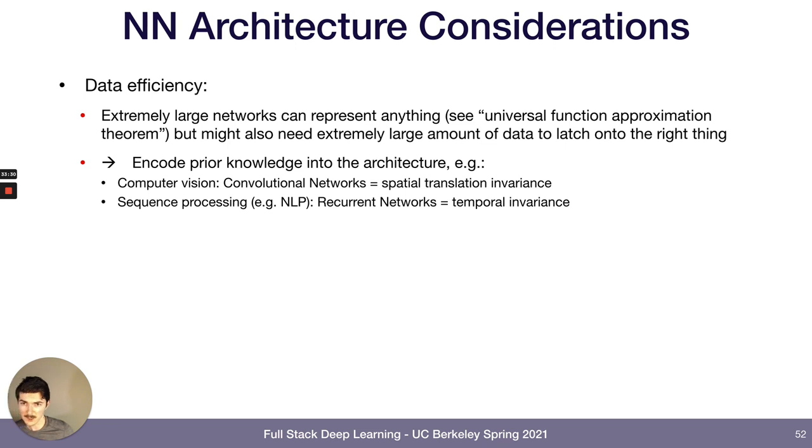So what we can do instead is we can encode knowledge that we have about the world into the architecture of the neural net. So for example, for computer vision, we use convolutional networks. And what that means is that it's a set of weights that are kind of tied together. And so no matter where in the input they're applied, they're always in a structure that's local, which is actually what happens in our eye, which we know from studies of the eye and the brain. And it's also what makes sense for the world because the world is composed of objects that don't radically change as you move around them and as they get closer to you. It's an edge is going to be an edge, even if it's closer to you, it doesn't change.